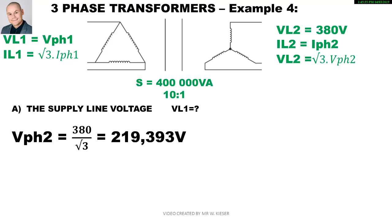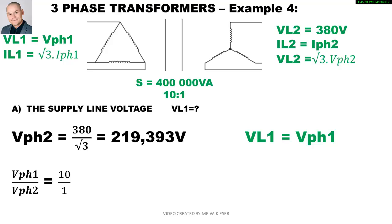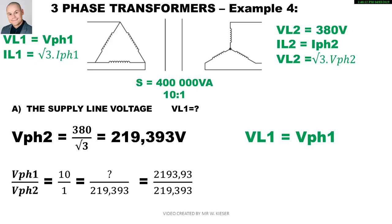The question asks for the primary line voltage. On the primary side it is delta connected, therefore VL1 equals V phase 1. Using the turns ratio of 10 to 1 and the secondary phase voltage of 219.39 volts: V phase 1 equals 219.39 multiplied by 10, giving 2,193.93 volts. Since VL1 equals V phase 1 for delta, the primary line voltage is 2,193.93 volts.